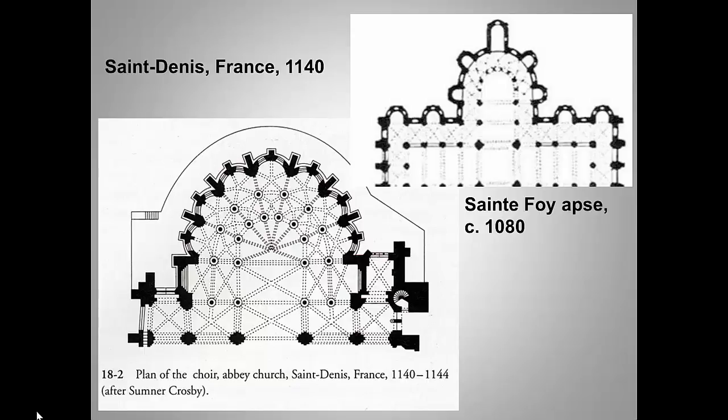So how is Abbot Suger's plan different? Both churches have radiating chapels, but at Saint-Denis, the walls between the apse chapels — or apsidal chapels, the name more often used in Gothic art — have been removed, opening up the cathedral dramatically.